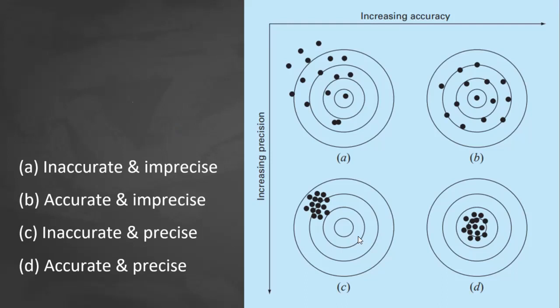To illustrate graphically, let's use this target practice. We liken the bullet holes to the predictions of a numerical technique, whereas the bull's eye represents the truth.